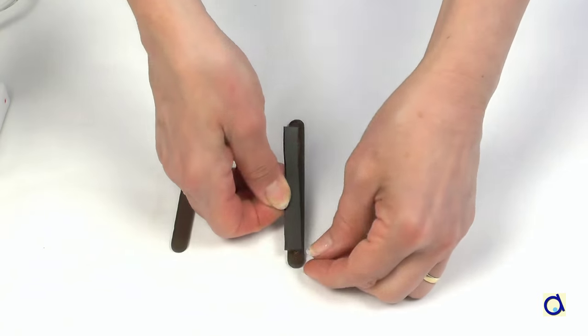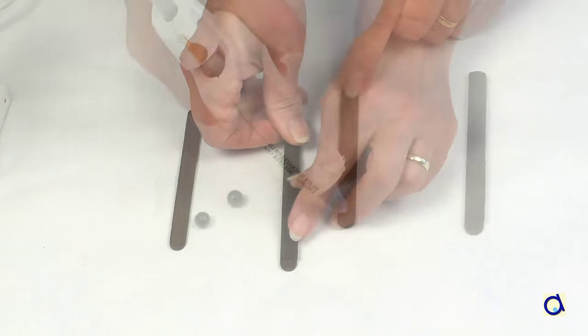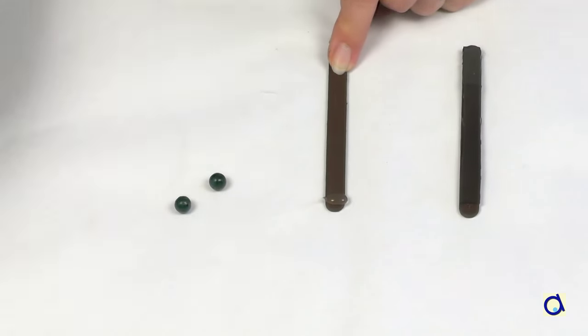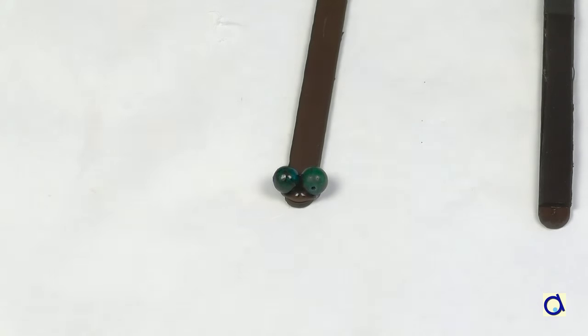When you are satisfied with the color, glue a magnetic strip on one of the sticks. Take the other stick and glue the eyes on it. This time, I used beads for eyes instead of googly eyes.